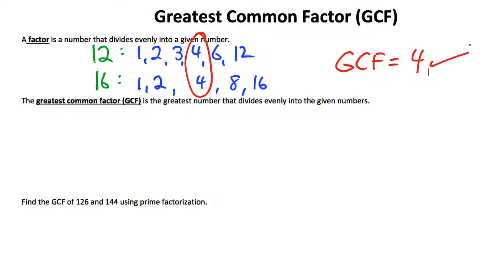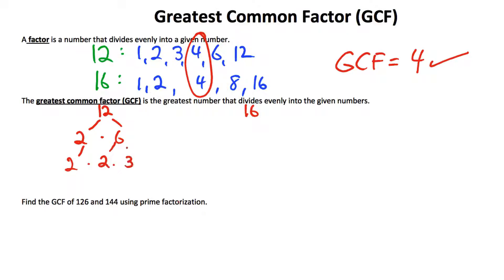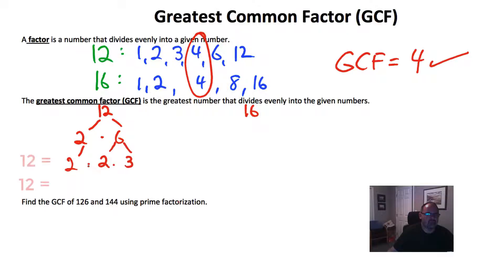Another way to find the greatest common factor is to do a prime factor tree, which you've done in the past. Let's create a factor tree for 12 and 16. For 12, we have 2 times 6, and then 6 can be broken down into 2 times 3. So 12 is equal to 2 squared times 3.